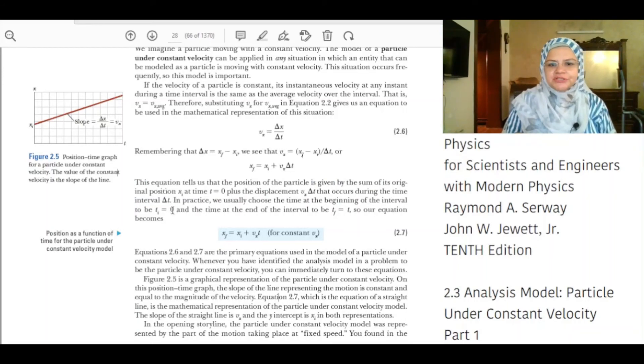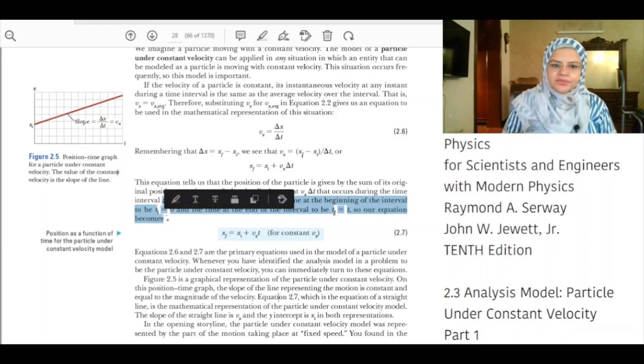In practice, we usually choose the time at the beginning of the interval to be ti equal to 0 and the time at the end of the interval to be tf equal to t. So our equation becomes xf is equal to xi plus Vx t for constant Vx.